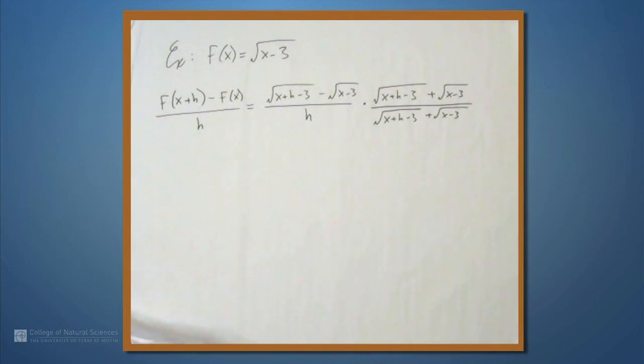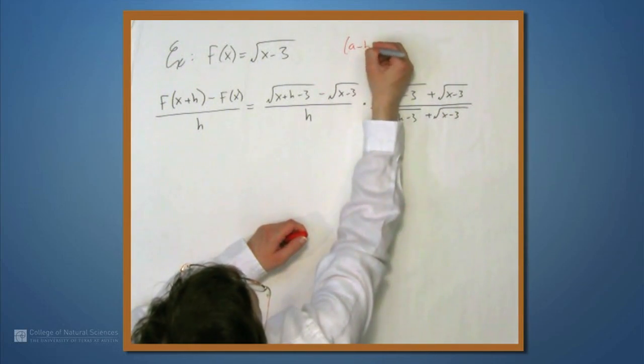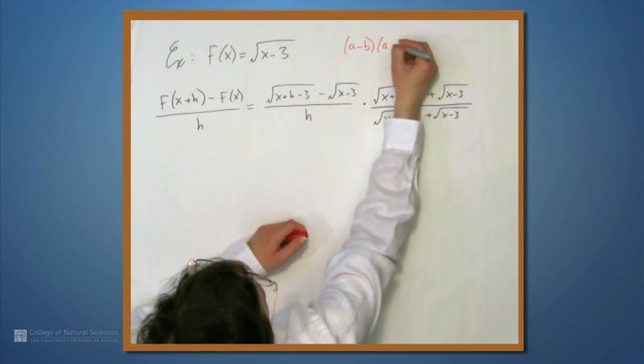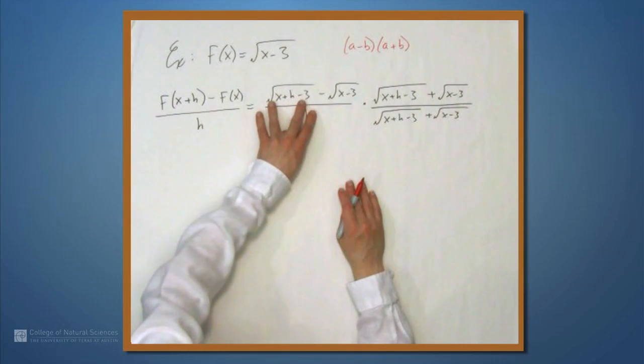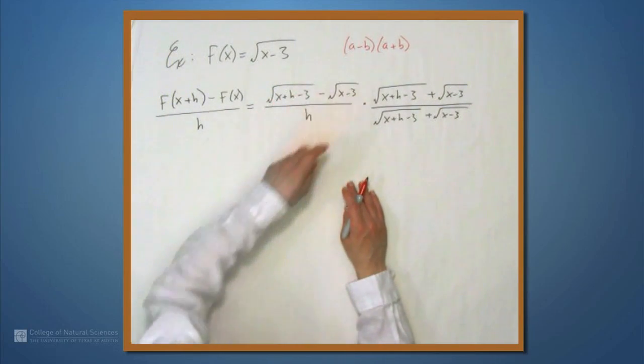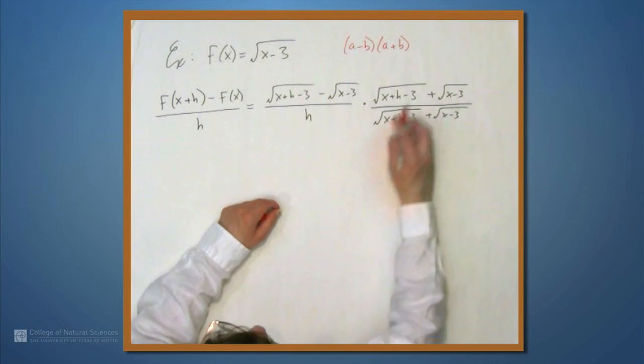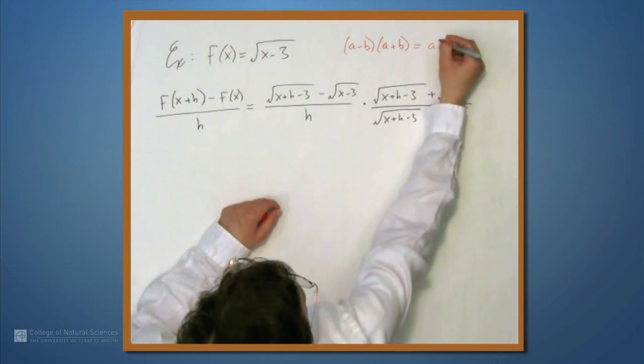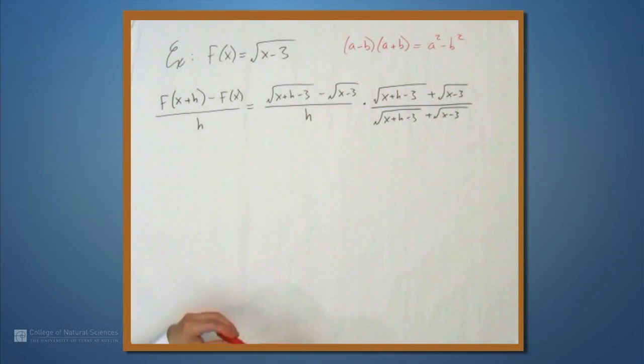Now, just a brief little aside, why are we doing this? This is because if you have something of the form (a-b)(a+b), which is what we have here, if you think of the square root expressions as a and b, this is what we have, a minus b, a plus b. This is a squared minus b squared. It's the difference of squares formula.